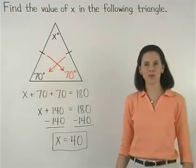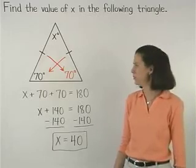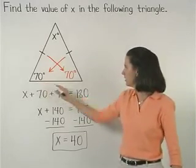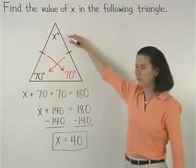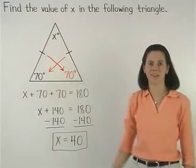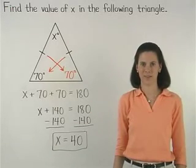So the angles of this isosceles triangle measure 70, 70, and 40 degrees.